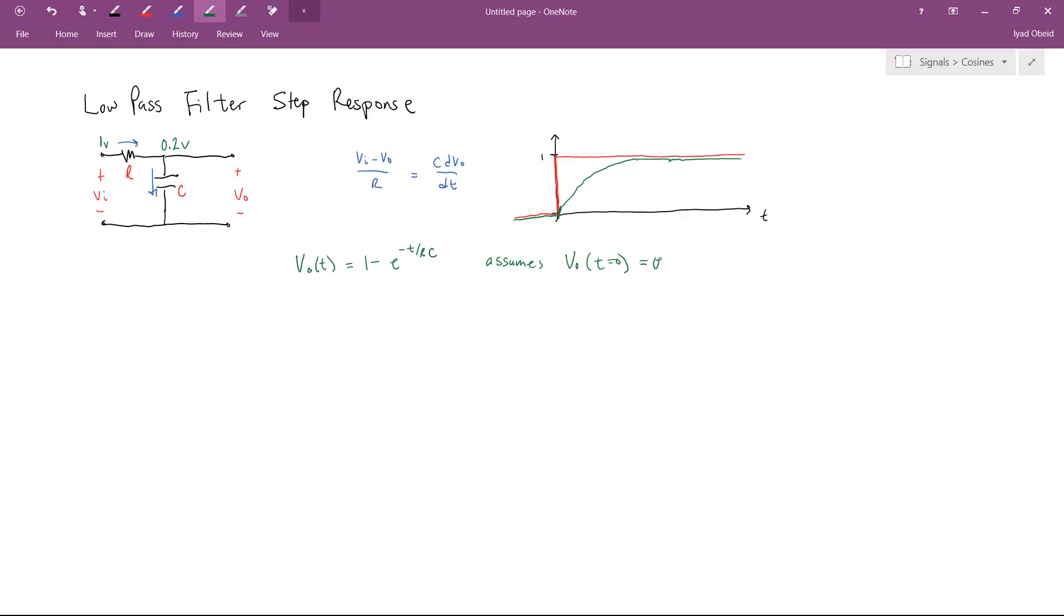So first thing to notice is that we should talk about the timing, how long it takes to charge. Generally speaking, we count in terms of time constants. So a time constant is equal to R times C, which always has the units of seconds. And generally speaking, if we wait until t equals 5 time constants, 5 tau,